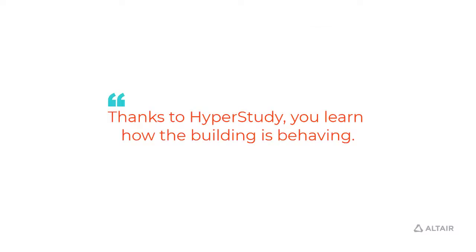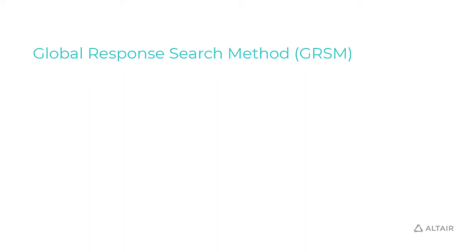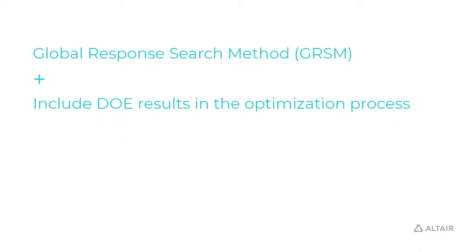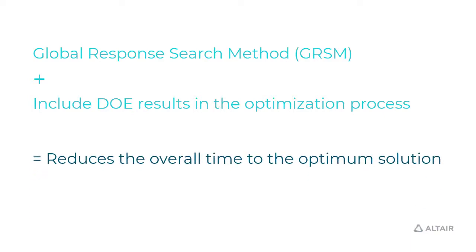You learn about how the building is behaving. Once the design of experiments is done, you move on to the optimization stage, where HyperStudy comes with many different optimization schemes. For our study, we chose the global response search method, which is the recommended method if you have a lot of different variables and your simulation times are not trivial. Another advantage is you can include the results from your design of experiments into this optimization, further reducing the overall time to reach an optimum solution.